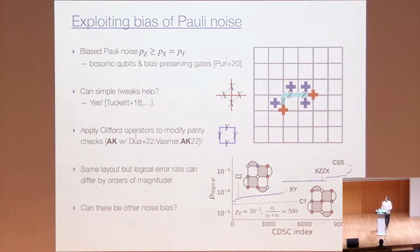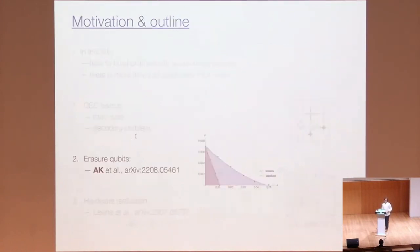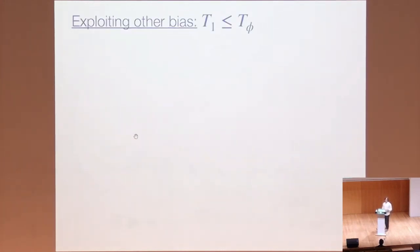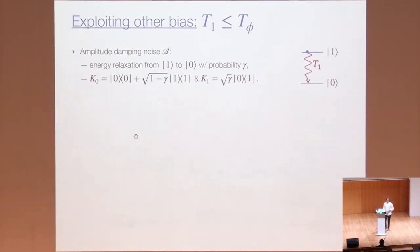What I depict is the performance of different realizations of the 3x3 surface code, where I apply different Clifford operators to change the Pauli basis I use to measure my parity checks. On the x-axis, I list all possible realizations of the surface code. On the y-axis, I plot the logical error rate. We see that the discrepancy between the best-performing surface code and the worst-performing surface code spans two orders of magnitude. So indeed, it buys us quite a bit. Now you may be wondering, can there be other noise bias?